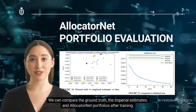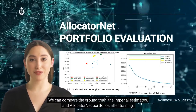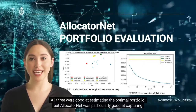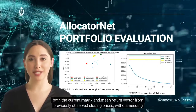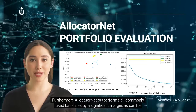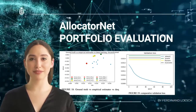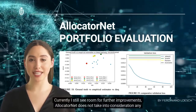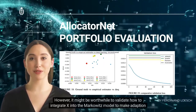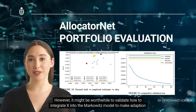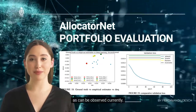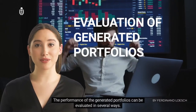Comparing the ground truth, empirical estimates, and AllocatorNet portfolios after training, all three were good at estimating the optimal portfolio, but AllocatorNet was particularly good at capturing both the covariance matrix and mean return vector from previously observed closing prices without needing any additional information. Furthermore, AllocatorNet outperforms all commonly used baselines by a significant margin. However, there is still room for improvement — AllocatorNet does not take into consideration any current market developments since the X input vector is entirely ignored, and the Markowitz model approach may not be ideal for high-volatility markets as currently observed.